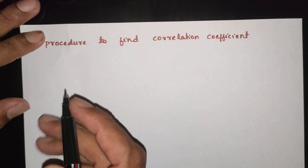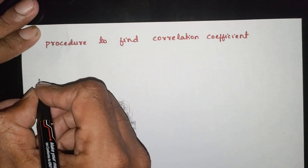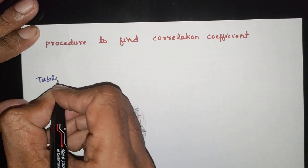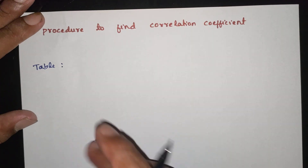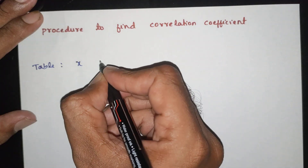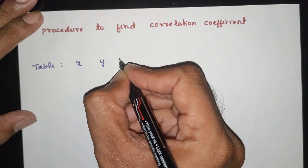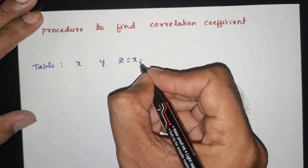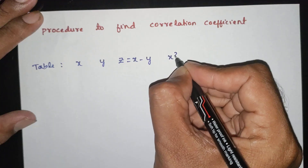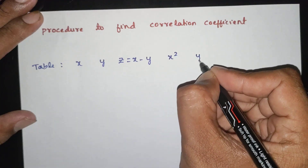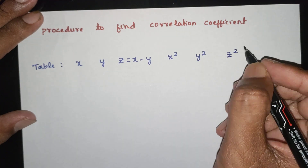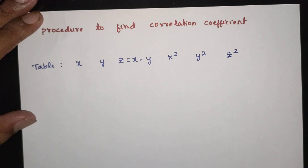We are able to find the table. The table has columns X, Y, and Z, where Z is equal to X minus Y.